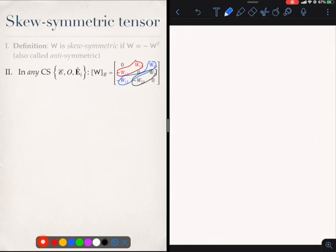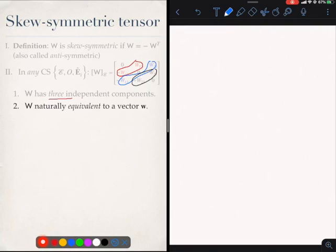So if you count the number of independent components in the matrix of W in any coordinate system, you will simply get 3. There will only be 3 independent components for W, no matter which coordinate system you choose. Which other object do I know which has 3 independent components in any coordinate system? It is a vector. Therefore, what we are saying is that every skew-symmetric tensor is equivalent to some vector small w.